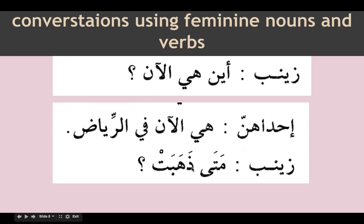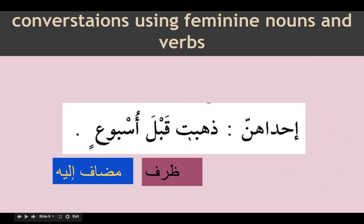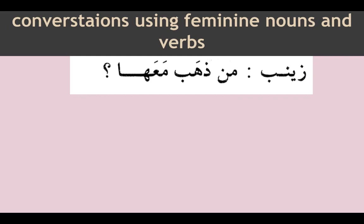Zainab asks: mata zahabat — when did she go? We are asking about a feminine verb. One of them says: zahabat qabla usbuin — she went before a week. Even without vowel signs we know it is not zahabt or zahabti. The answer is about hiya, so zahabat has tau tanith. We look for the fa'il, do not find it, so we say mustatir taqdeeruhu hiya — referring back to umm. Qabla is zarf, usbuin is mudaf ilaihi.